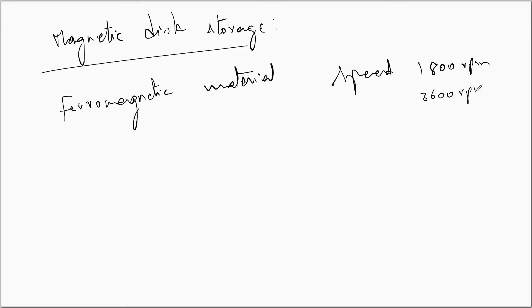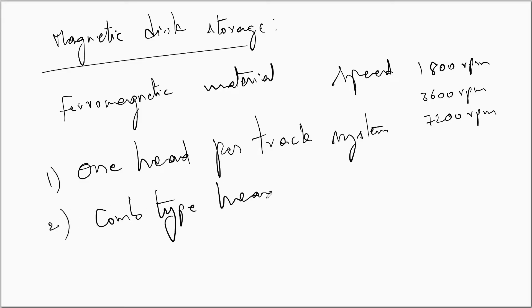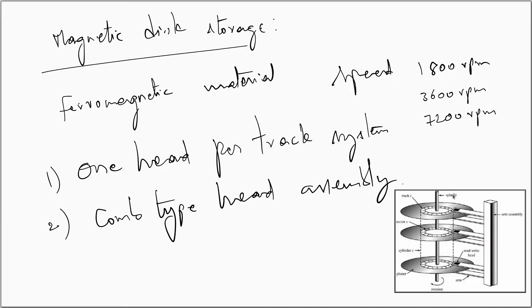Speeds of 3600 rpm and even 7200 rpm are also available nowadays. There are two different configurations possible for the magnetic disc storage: the first is the one-head-per-track system, and the second is the comb type head assembly. In a typical comb type head assembly, you have a vertical axis about which the spindle is rotated, magnetic plates, and a read-write head corresponding to each of those magnetic plates.